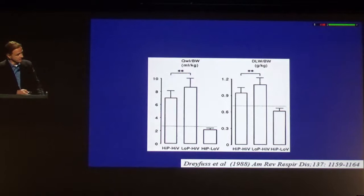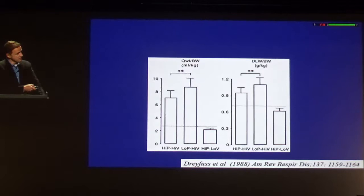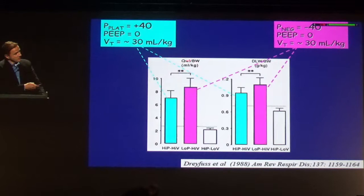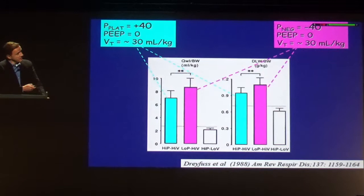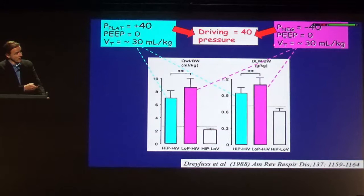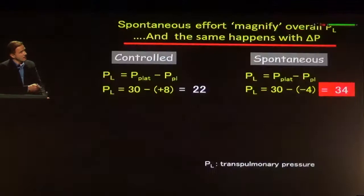I would like to remind you about these old papers on ventilator-induced lung injury — one of the most seminal ones. In this particular paper on alterations in permeability and lung edema measured by different technologies, the important thing is that whether you have positive pressure ventilation or negative pressure ventilation simulating exactly what your inspiratory muscles are doing, if you generate a high gradient of pressure across the respiratory system, you are going to have a big injury.